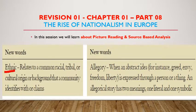Ethnic: relates to a common racial, tribal, or cultural origin or background that a community identifies with or claims. Allegory: when an abstract idea — for instance, greed, freedom, or liberty — is expressed through a person or a thing. An allegorical story has two meanings: one literal and one symbolic.